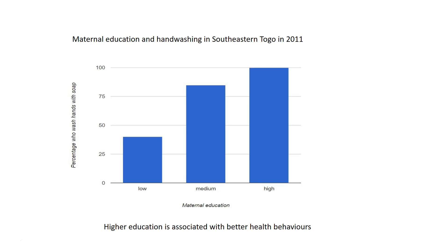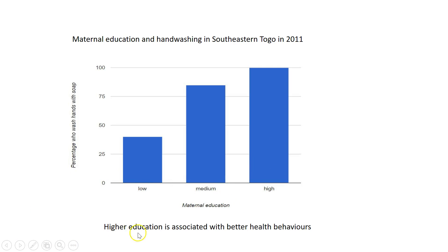A 2011 study looked at patterns of hand washing amongst mothers in southeastern Togo and found that education was an important predictor of whether mothers wash their hands with soap — low educated women tended not to, while the highest educated tended to do so. This is important because hand washing is an important strategy for preventing diarrhea. If the mothers are doing it, the children likely will too. So higher education is associated with better health behaviors.